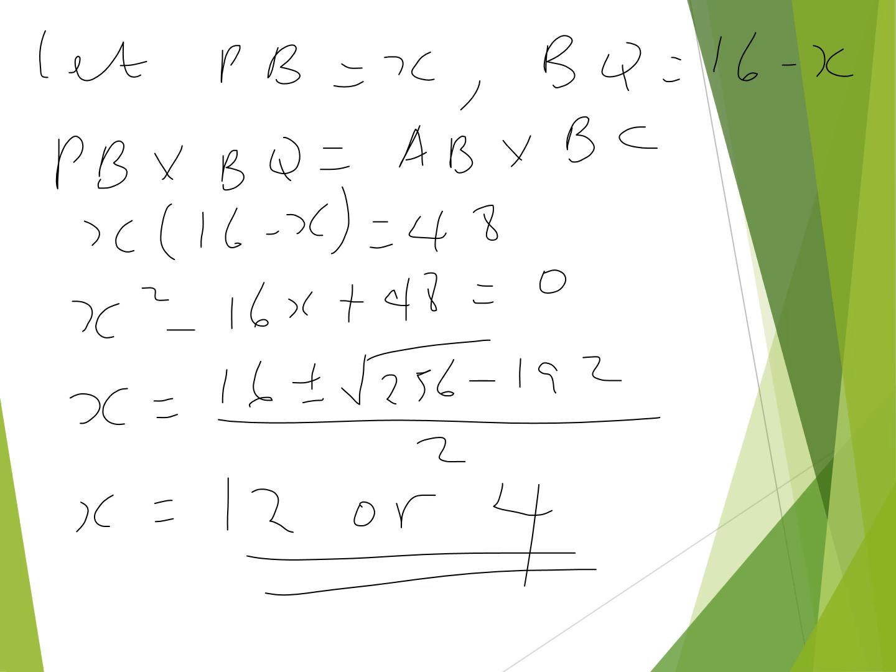Here is the working: let PB be x, so BQ becomes 16 minus x, since the whole length of chord PQ is 16. PB times BQ equals AB times BC, so x multiplied by (16 minus x) equals 48. Rearranging gives the quadratic equation x² minus 16x plus 48 equals zero. Solving gives either x equals 12 or x equals 4. Go through that working and make corrections if needed.